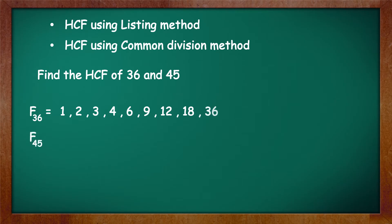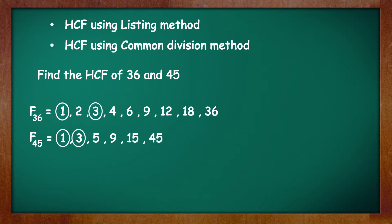F-45 is equal to 1, 3, 5, 9, 15 and 45. The common factors are 1, 3 and 9. The greatest common factor is 9.